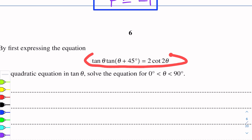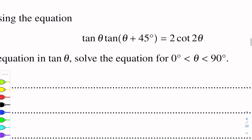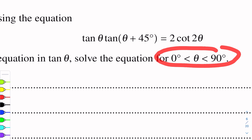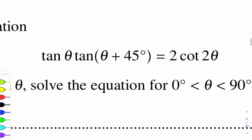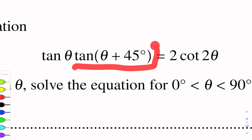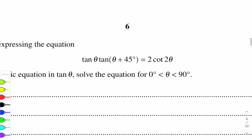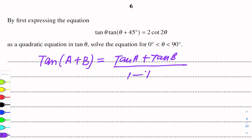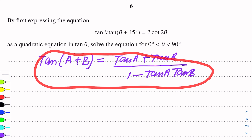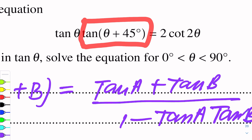First of all, हमने इस equation को express करना है एक quadratic equation involving tan θ. फिर उस equation को solve करके theta की value find करनी है in this interval. तो यहां पर tan(A+B) formula use होगा — tan(θ + 45°) को expand करना है. Formula है: tan(A+B) = (tan A + tan B) / (1 − tan A · tan B).